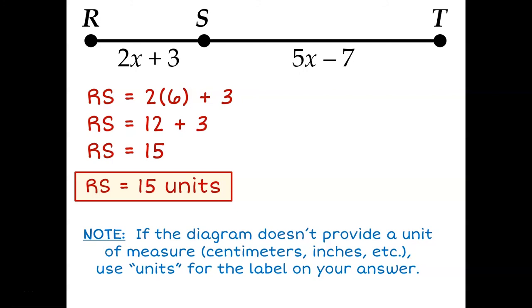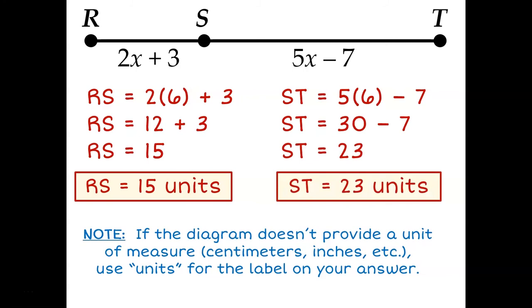Let's also calculate the length of ST by plugging in 6 for X. So ST would be 30 minus 7, which is 23. Now it's always a good idea to double check your answer. Remember the original instructions told us that the length of RT was 38, and now I figured out that RS is 15 and ST is 23. If I add 15 and 23, do I get 38? Yeah, I do. So I must have done this correctly.